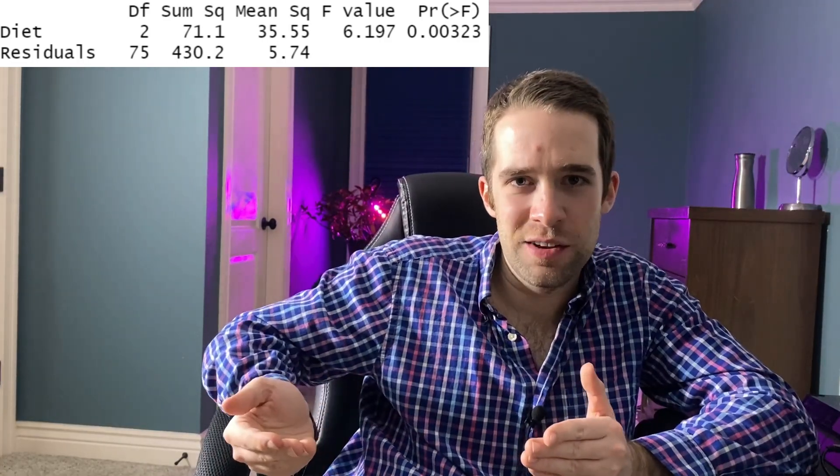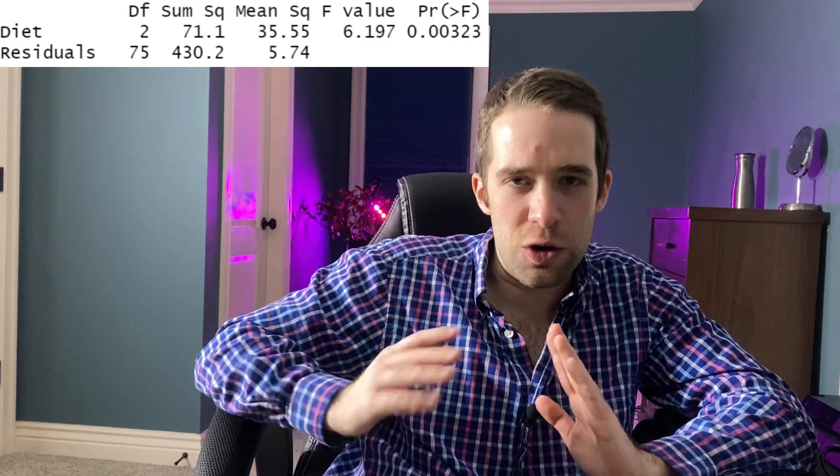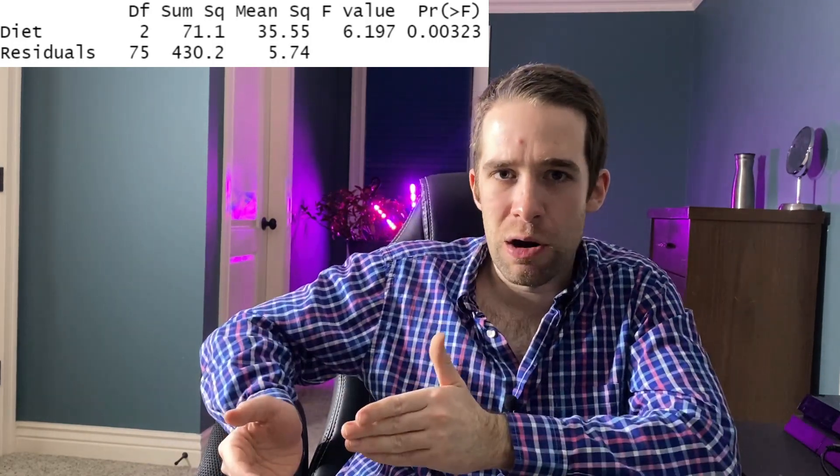Let's look at a real example — here's an ANOVA table from the diet data. The degrees of freedom are 2 and 75. Sum of squares groups is 71.1 and sum of squares error is 430.2. Dividing these by 2 and 75 respectively gives mean square groups of 35.55 and mean square error of 5.74. Dividing mean square groups by mean square error gives an F statistic of 6.197. The p-value is the area to the right of that — 0.00323. We decisively reject the null hypothesis, and it appears that at least one of these diets is different from the others.